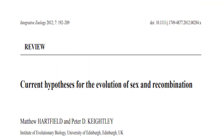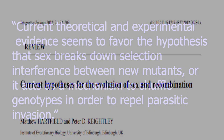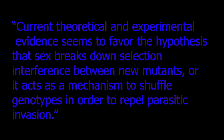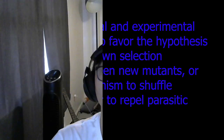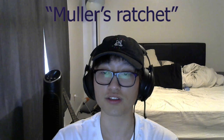According to current hypotheses for the evolution of sex and recombination by Matthew Hartfield and Peter D. Keightley, from the Institute of Evolutionary Biology at the University of Edinburgh in the United Kingdom, current theoretical and experimental evidence seems to favor the hypothesis that sex breaks down selection interference between new mutants, or it acts as a mechanism to shuffle genotypes in order to repel parasitic invasion, which is the hypothesis Muller's Ratchet we just talked about.